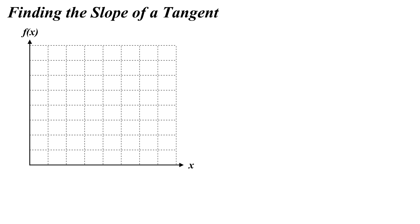In this video we're going to talk about how to find the slope of a line that is tangent to any curve. Go ahead and draw a graph of f of x versus x, and then draw a positive sloping line. Pick two points on that graph and draw a straight line between them. This is called a secant line — it cuts the curve.